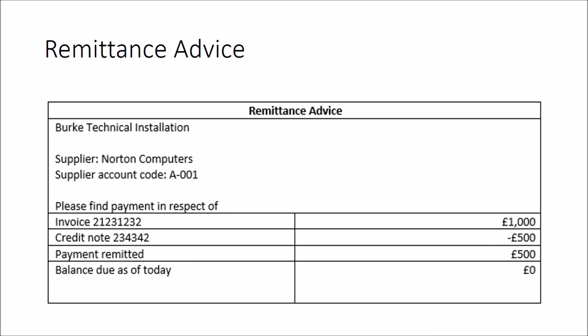They might give you a remittance advice that the buyer is producing alongside the other person's sales ledger account, or they might give you the purchase ledger on the remittance advice and ask what's been missed. The remittance advice is what the buyer is saying they are paying. They might also show a sales ledger account — for example, Norton Computers — where the figures differ, and ask what invoices have been missed.